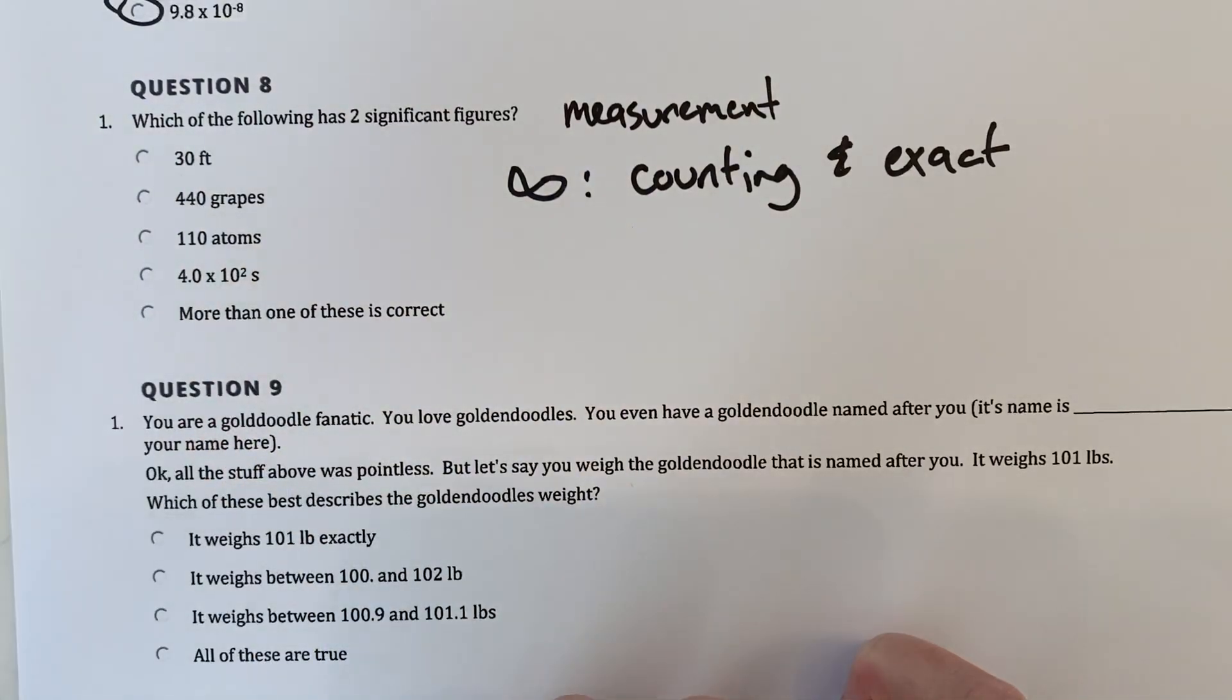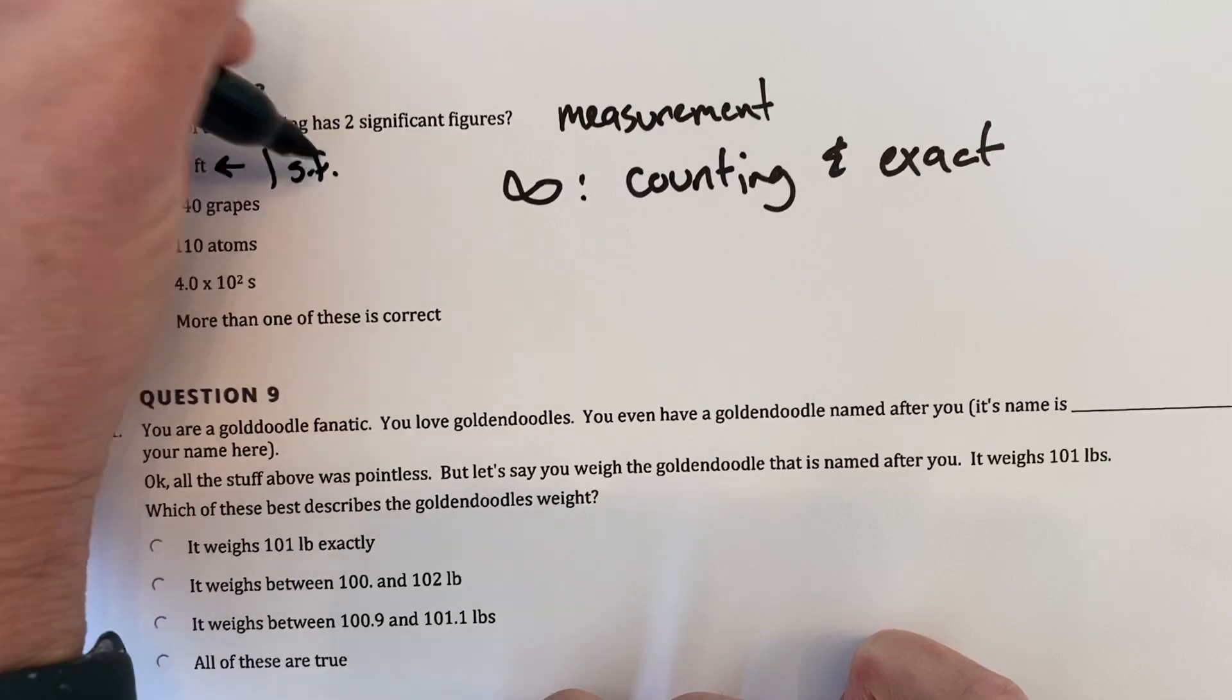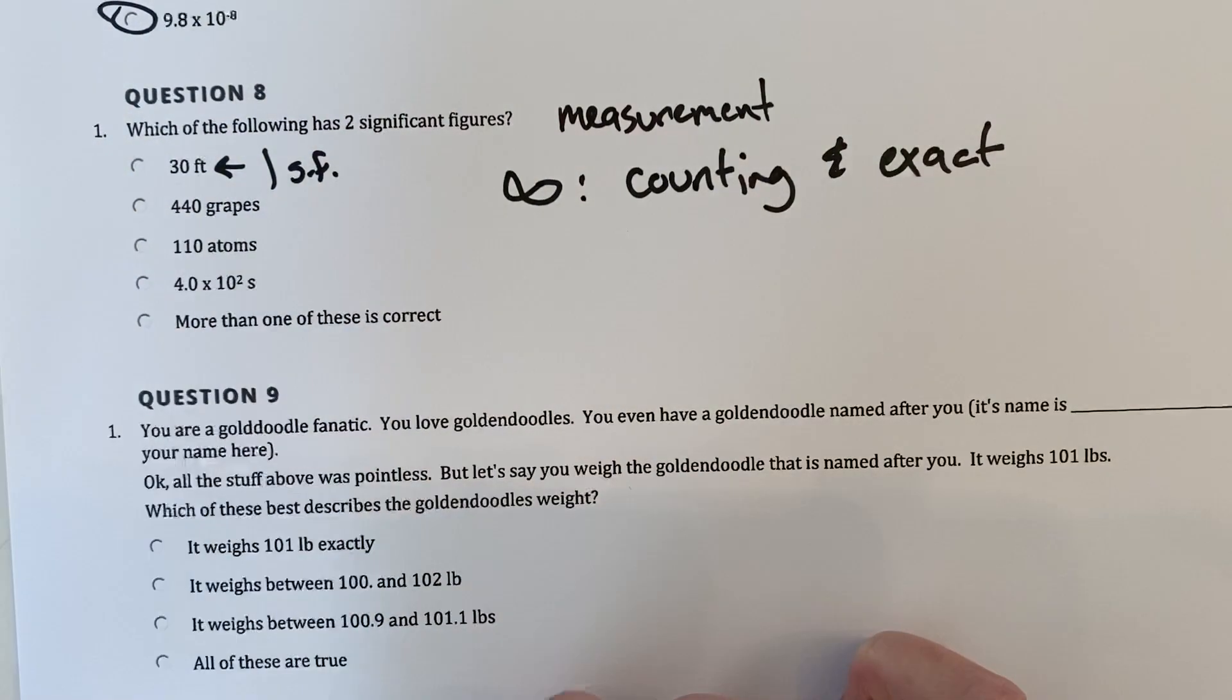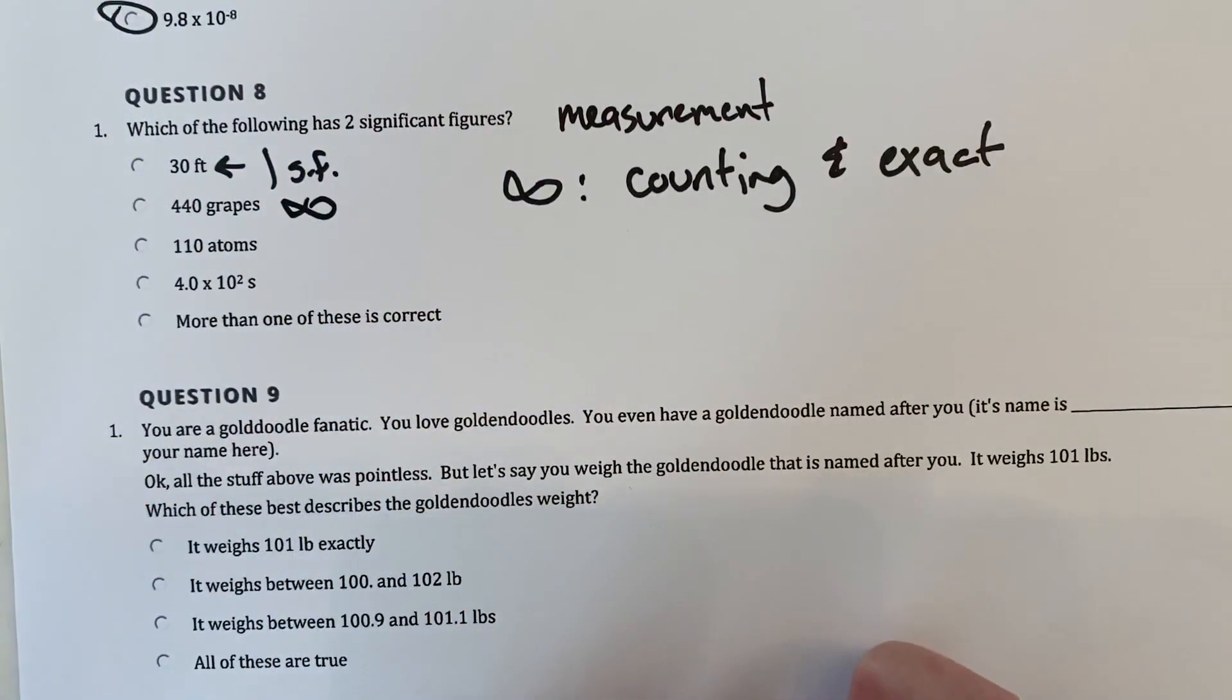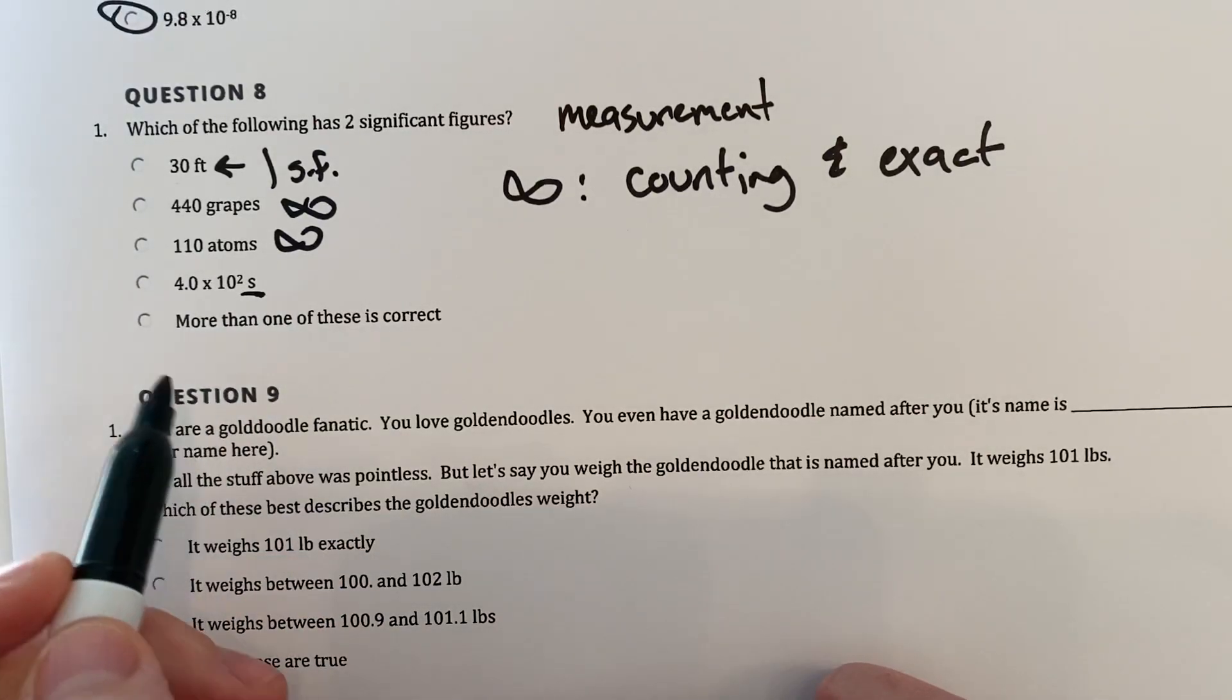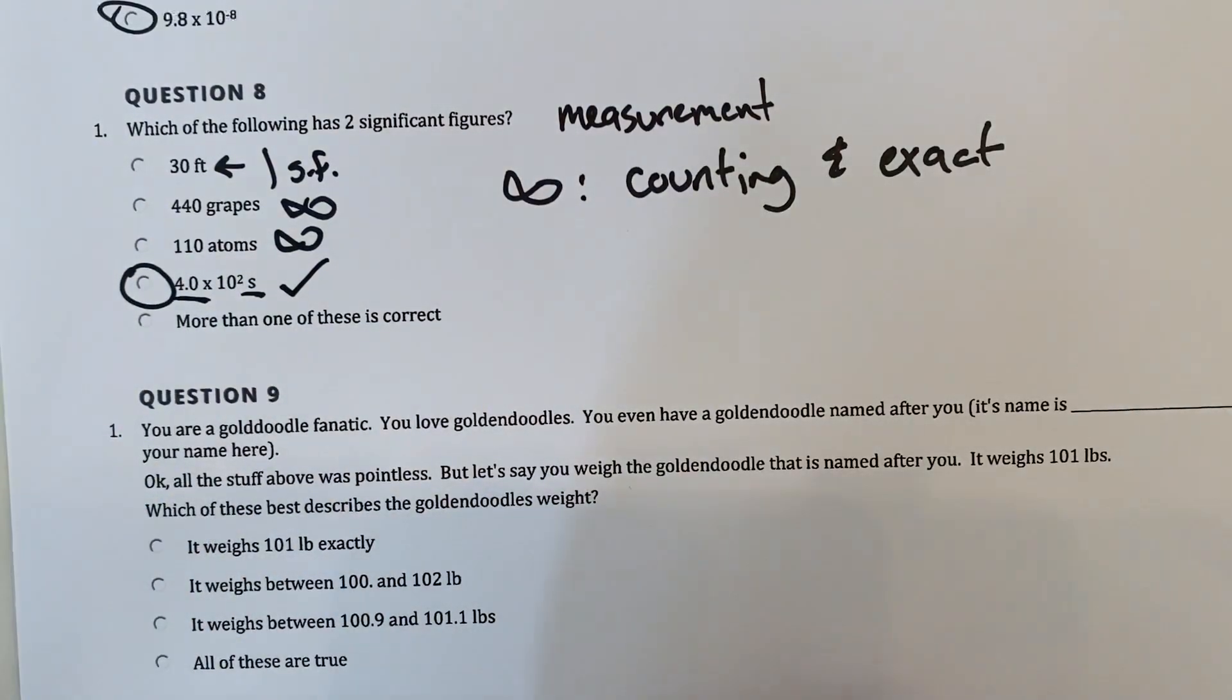Alright, so here we have 30 feet, that is a measurement. That has one sig fig. 440 grapes. Ah, we're counting grapes, you don't measure grapes. For example, you don't measure things in grapes, you're not like, hey, I am 843 grapes tall. That's just weird. This has an infinite number of sig figs. 110 atoms, exactly the same situation, an infinite number of sig figs. And here we have 4.0 times 10 to the 2 seconds, this is measurement time, is measured. And this has 1, 2 sig figs, and that is why it is your answer.